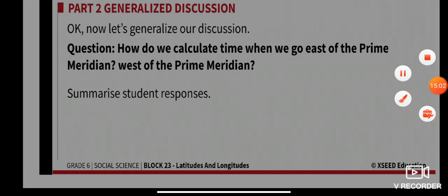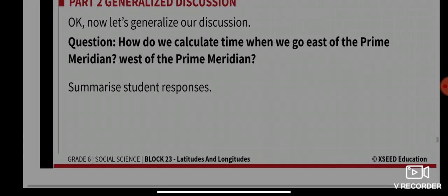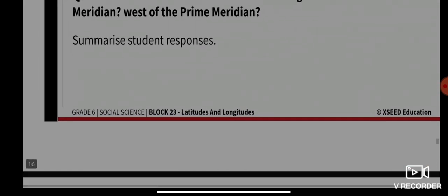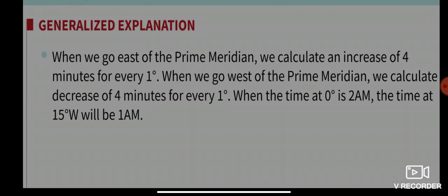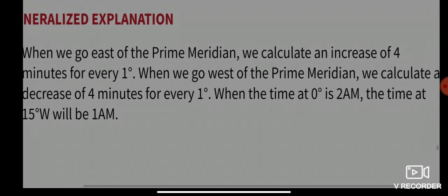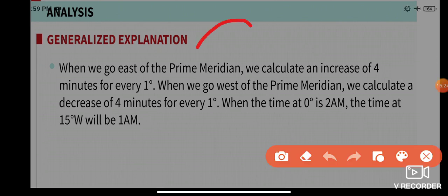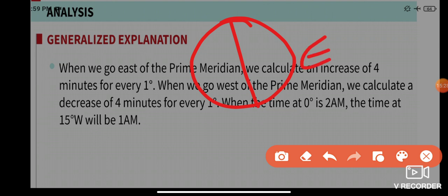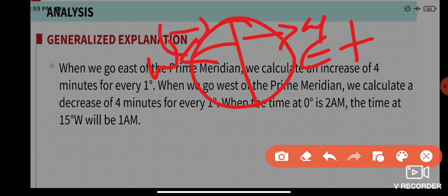How do we calculate time going east or west of the prime meridian? When we go east of the prime meridian, we calculate an increase of four minutes for every one degree. East means this side, and west means this side. So going east, we add four minutes per degree.